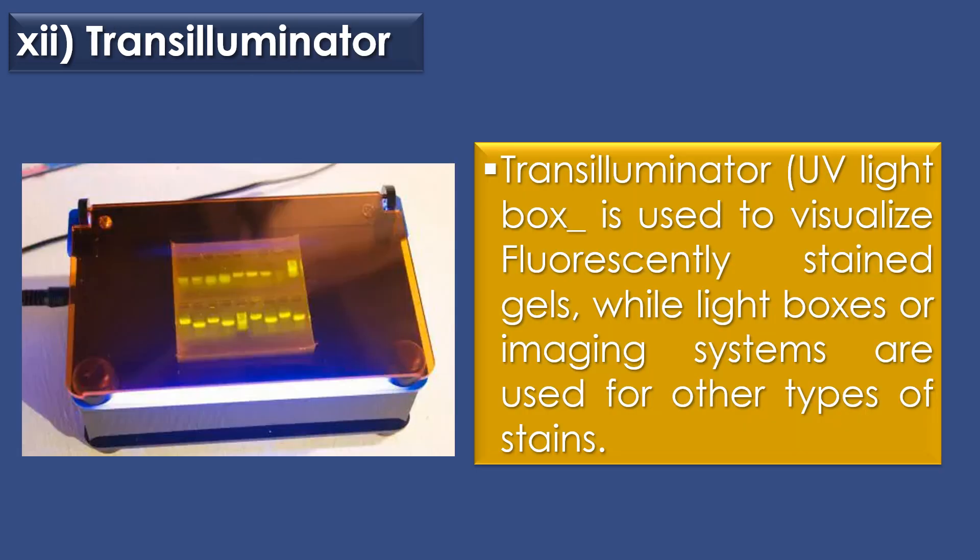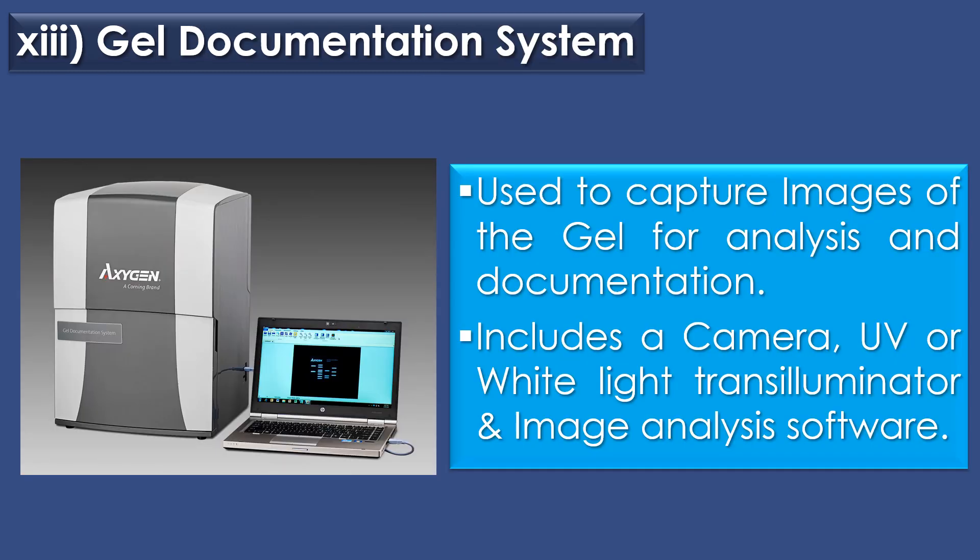The twelfth component is transilluminator. A transilluminator or UV light box is used to visualize fluorescently stained gels, while light boxes or imaging systems are used for other types of stains. The thirteenth component is gel documentation system. The gel documentation system is used to capture images of gel for analysis and documentation; typically it includes a camera, UV or white light transilluminator, and image analysis software.